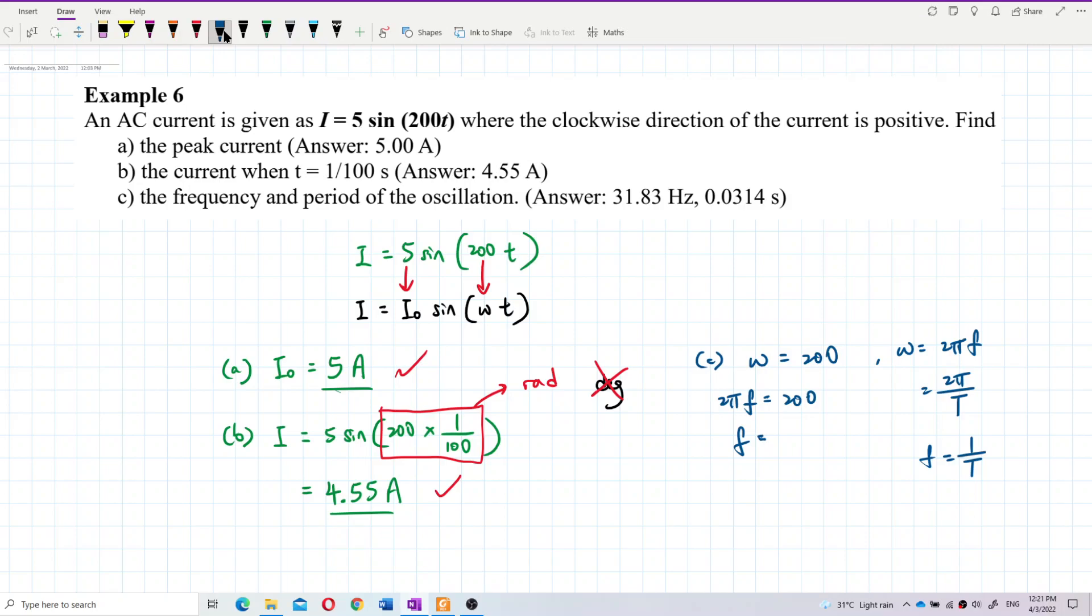The answer is 31.83 hertz. And frequency is 1 over period also, so period is 1 divided by 31.83.